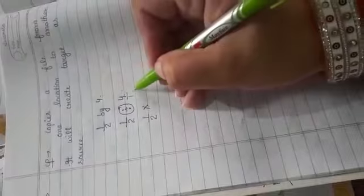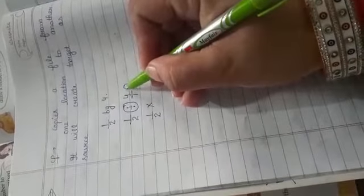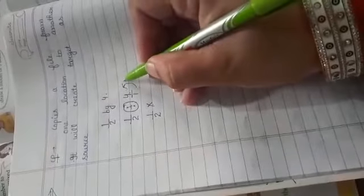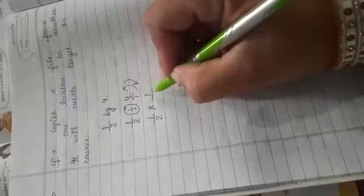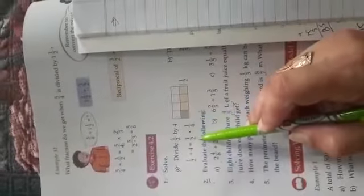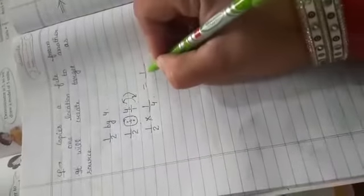Reciprocal means the denominator goes to the numerator position and the numerator goes to the denominator position. So 1/4 becomes 1/2 multiply by 1/4. Now multiply: 1 multiply by 1 equals 1, 2 times 4 equals 8. The answer is 1/8.